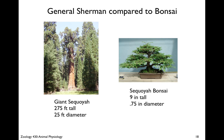Back to General Sherman compared to a bonsai — that's quite a difference in shape. The giant sequoia is 275 feet tall and 25 feet in diameter, whereas a little sequoia bonsai is only 9 inches tall and 0.75 inches in diameter — a much bigger diameter-to-height ratio.